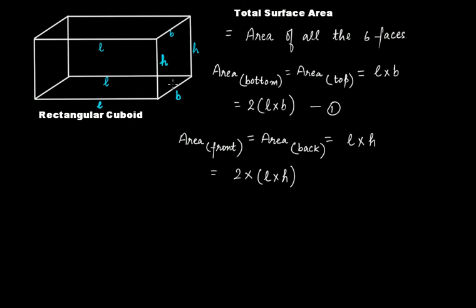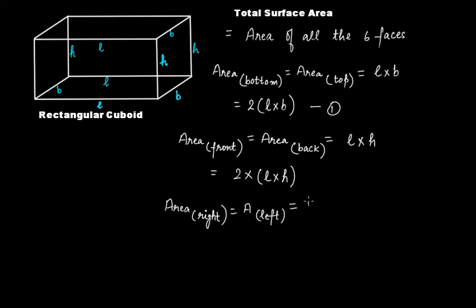The right side face and the left side face are identical. The area of the right side face equals the area of the left side face, and it equals breadth multiplied by height — B × H. So the total area of these two faces is 2 × B × H.